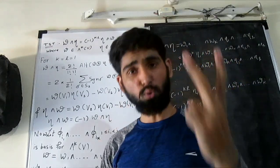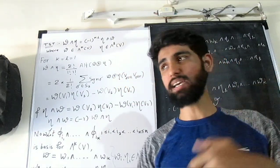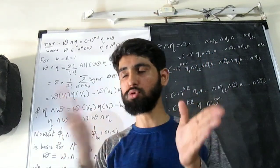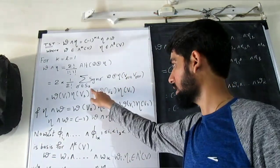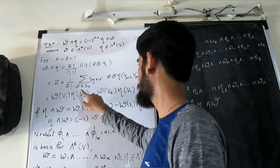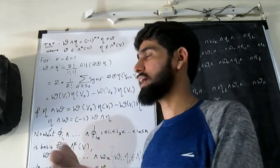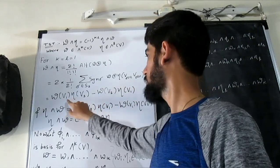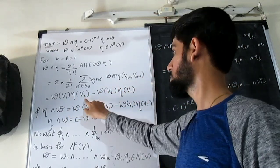We know there are only two elements in S2: one is identity and one is the transposition, that is 1 goes to 2. So if we expand this summation, this 2 and 2 will get cancelled. We get omega v1, since for the first element we are taking identity, so sigma of 1 is 1, sigma of 2 is 2.